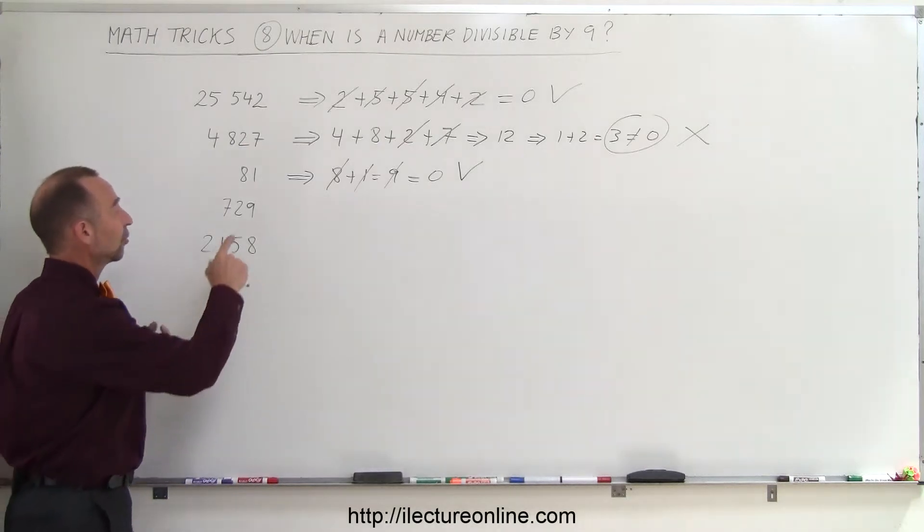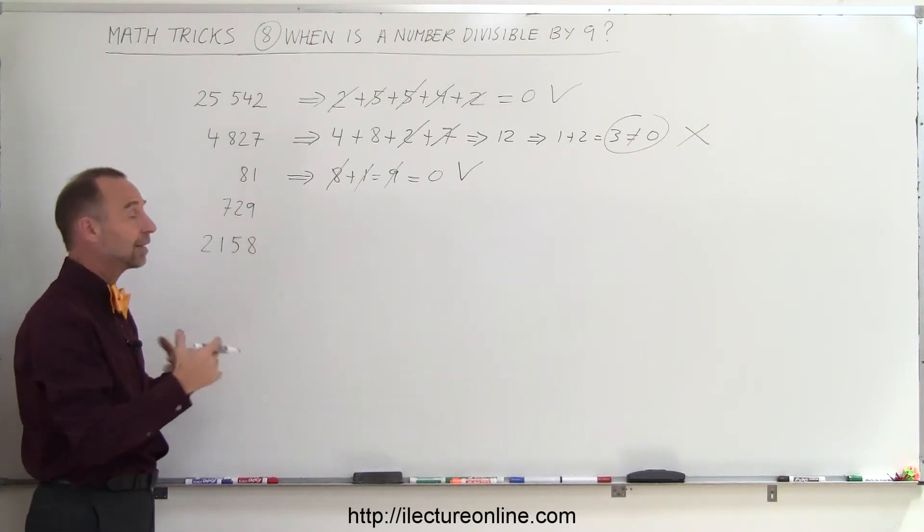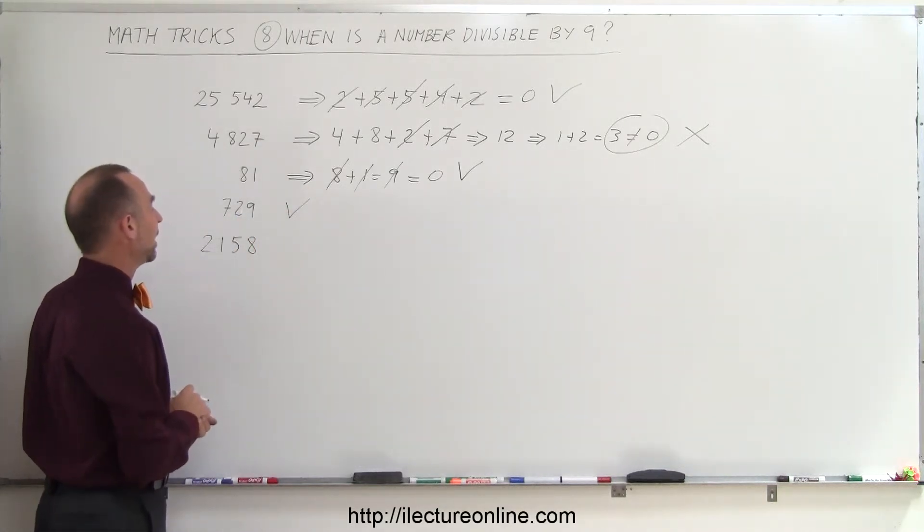What about this number? Well, we can just look at it. 9—that would cancel out. 7 plus 2 is 9, so when I add up all the numbers, I get 9 plus 9. Therefore, yes, this is divisible by 9.